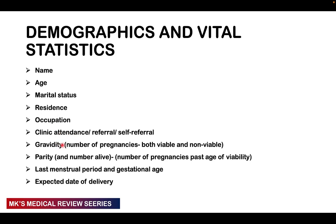Ask about the number of pregnancies — both viable and non-viable. Don't just ask how many pregnancies they've had, because a mother may say one pregnancy when she's actually had three, with two miscarriages. Keep this in mind regarding gravidity. Also ask about parity and children alive. Ask about the last menstrual period, gestational age, and expected date of delivery, though these will be covered more in the current obstetric history.